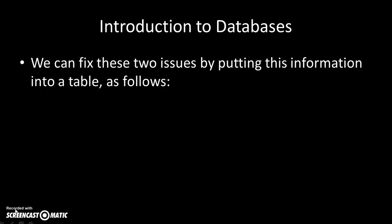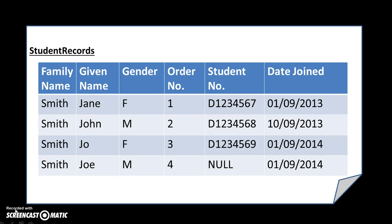What we really need is a table. We'll put this information in a table with columns: family name (Smith), given name (Jane, John, Joe, Joe), gender (female, male, female, male), order number (first, second, third, fourth student), student numbers as before, with the unknown one called null which means blank, and the date joined in a consistent format. Putting these student records in a table allows for much greater consistency — the same information is there as in the notepad file, but structured more easily.